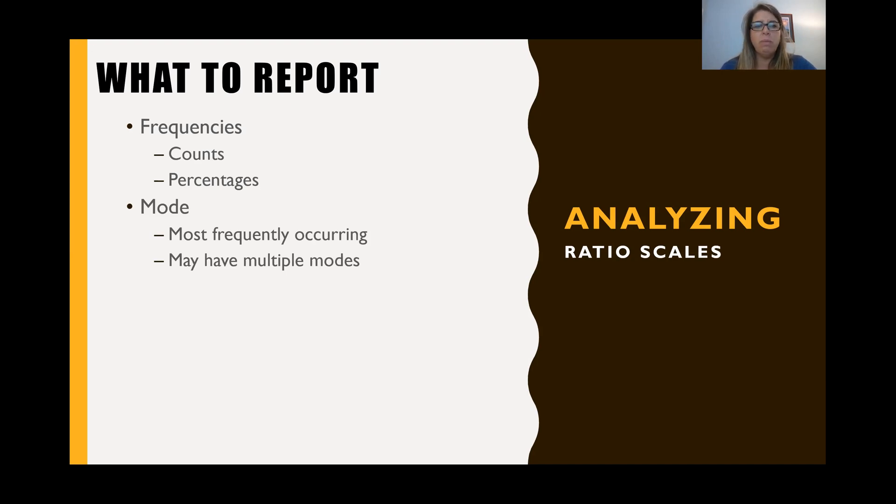We also can report mode, which is the most frequently occurring category that was selected. And we may have multiple modes and the higher the number of options that you have, the different ages that they could be, the more likely you are to have multiple modes. You can also report median, just like when it comes to ordinal and interval scales. So again, you just place the numbers in value order and you select the number that's exactly in the middle.